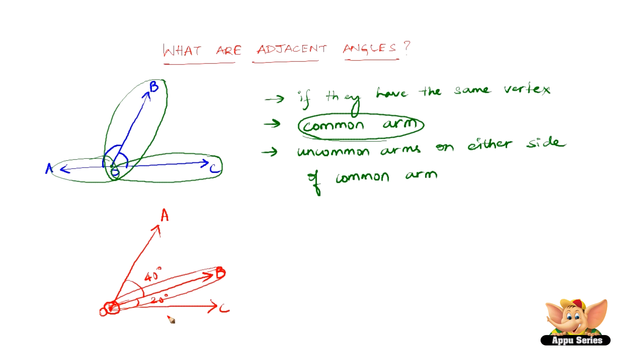O, C does not figure in angle A, O, B and O, A does not figure in angle B, O, C. So these are examples or an example for adjacent angle.